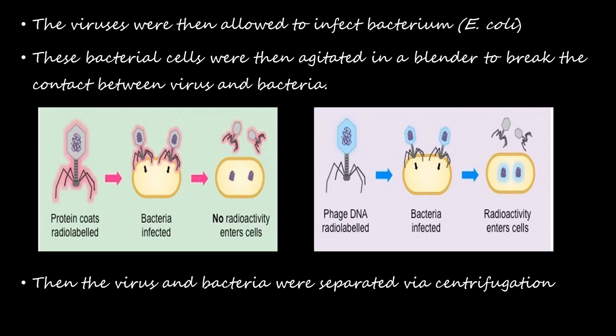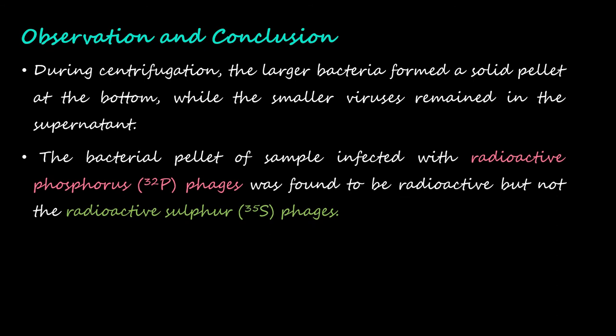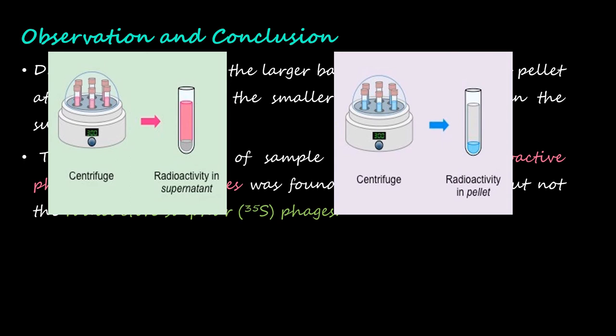Then the virus and bacteria were separated via centrifugation. During centrifugation, the larger bacteria formed a solid pellet at the bottom while the smaller viruses remained in the supernatant. The bacterial pellet of sample infected with radioactive phosphorus phages was found to be radioactive, but not the radioactive sulfur phages.